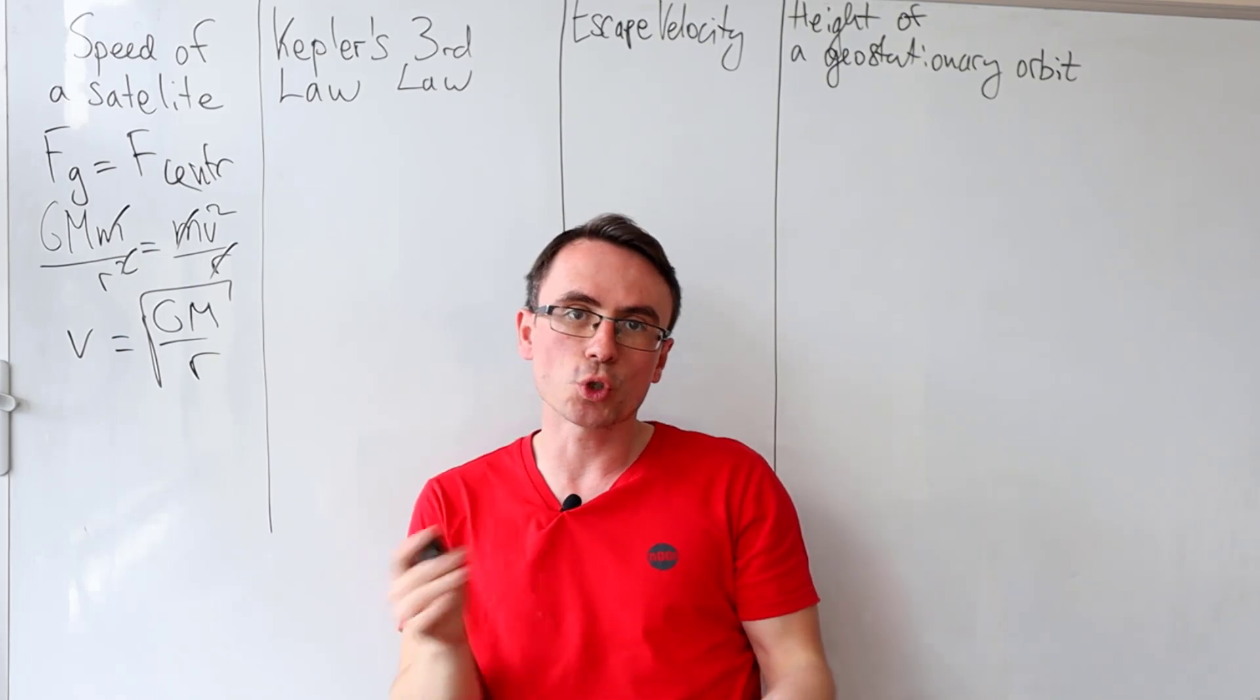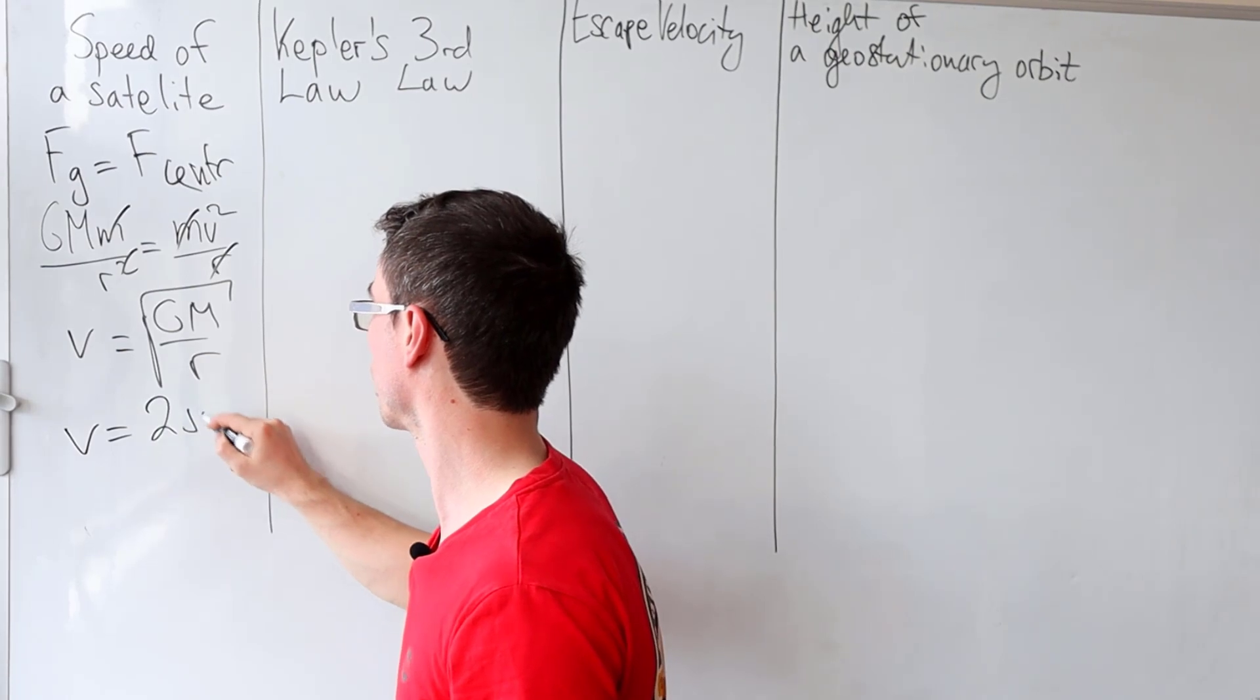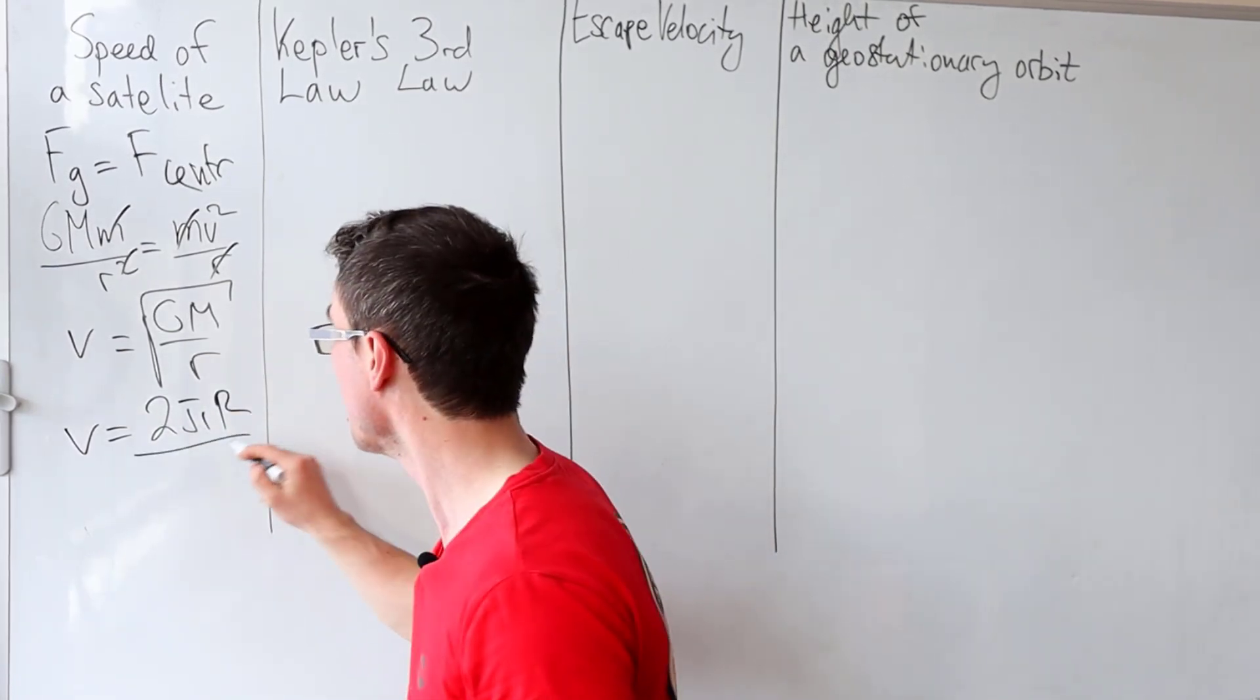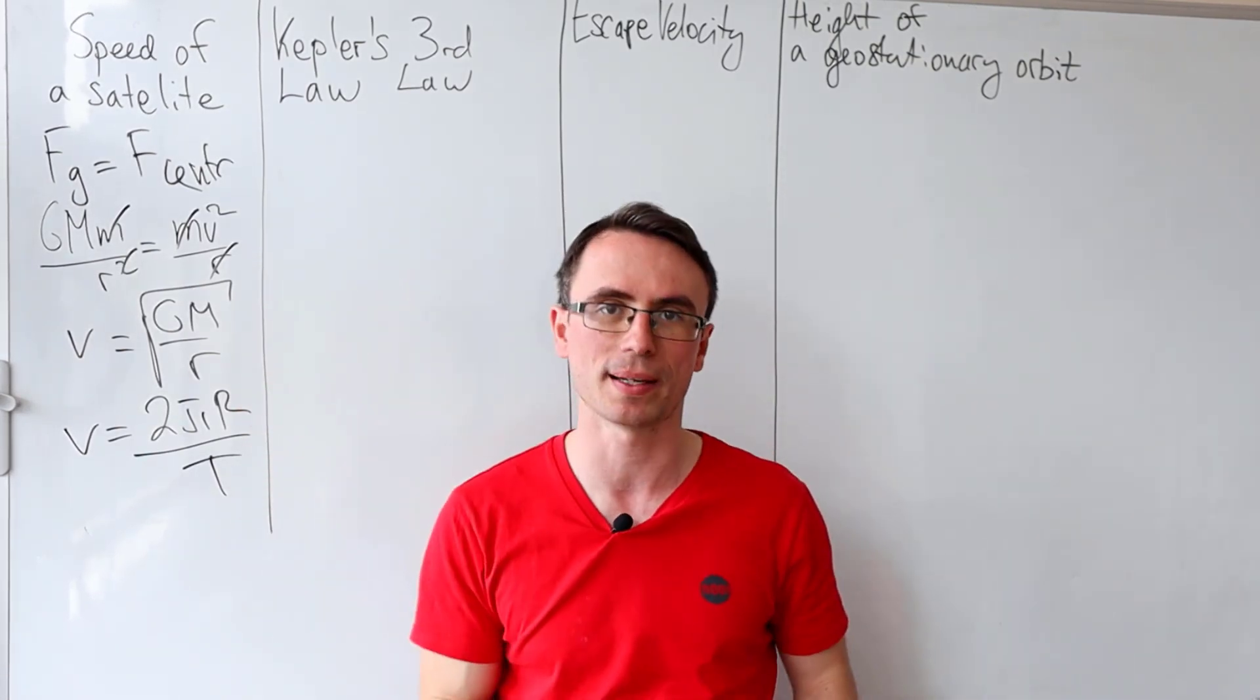Notice that if the satellite is just going in a circular orbit, we can also just use v is equal to 2πr which is the circumference of the circle divided by the time period, distance over time.